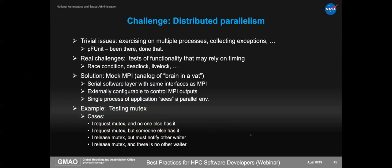Distributed parallelism. There's a trivial aspect already addressed: we need to run tests on multiple processes, know which process has failed, and write blocking assertions. The real challenges are that real MPI code can have race conditions, deadlocks, and livelocks, and you want to make sure your logic doesn't lead to that. You can't rely on a simple test to ensure this never happens — your test is probably running on fewer processes, not running after something that might have introduced load imbalance, and it might just be a very rare, subtle timing event you're not capturing.